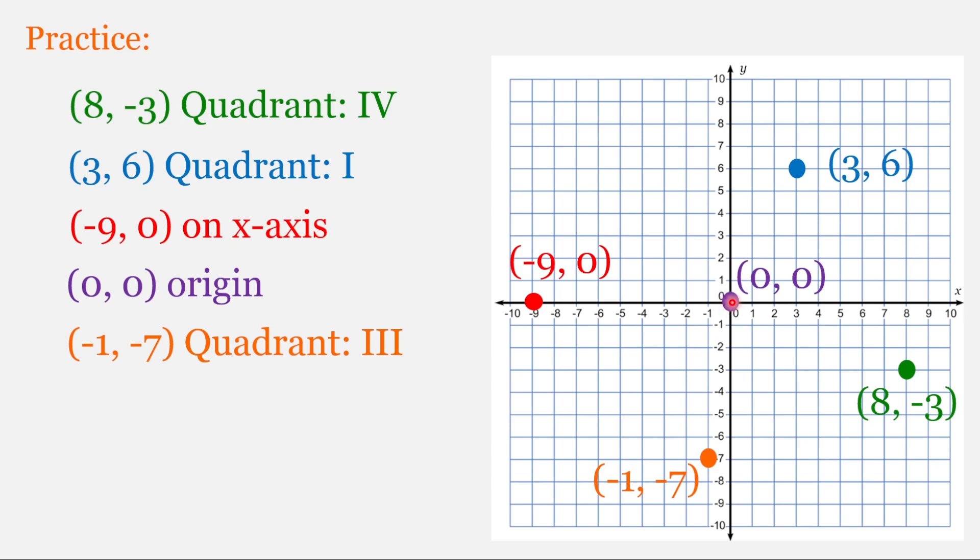The purple point. So this point moves neither right or left, nor up or down. This is the origin. And the origin has an ordered pair of 0, 0. The origin is also not in a quadrant.